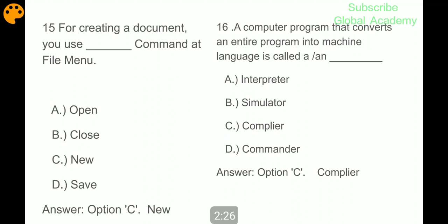For creating a document you use which command at file menu? New. A computer program that converts an entire program into machine language is called compiler, C part.